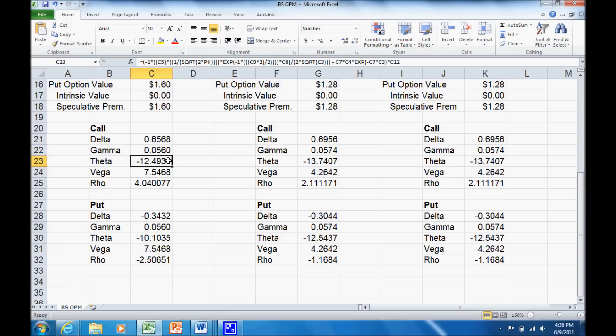Theta measures how sensitive the option price is to the time remaining to expiration. Sometimes you'll hear that referred to as time decay. Vega measures how sensitive the option price is to the volatility of the underlying stock, and rho measures how sensitive it is to the risk-free rate. Easy way to remember that: theta, T for time; vega, V for volatility; and rho, R for risk-free rate.